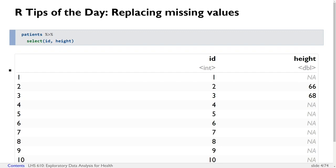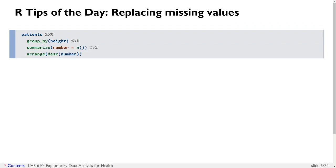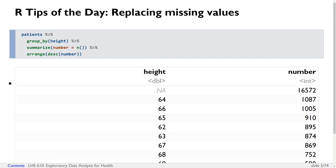So let's first count up and see how many missing values there are. Starting with the patients data frame, we group by height. Remember that height is an integer, or rather kind of round numbers, so there will be several people with the exact same height. We summarize with number equals N, and arrange in descending order. What we find is that height as a missing value is the most common value, with 16,000 people having missing values for height.